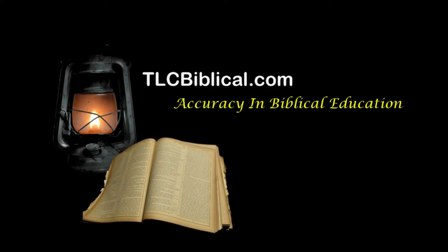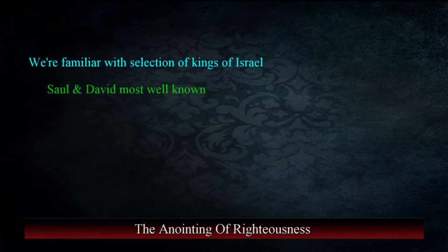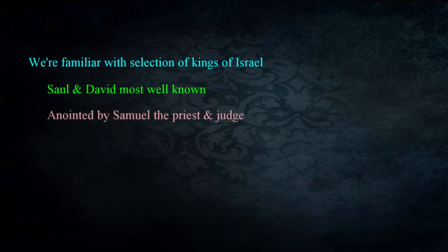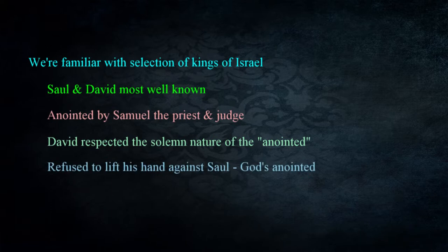In the Old Testament we're familiar with stories of the kings of Israel and their selection. Two of the most famous are Saul and David, who were both anointed by Samuel the priest and judge. As David fled from Saul, he respected the solemn and sacred nature of the anointing of the king and at times refused to lift his hand against Saul because he was God's anointed.